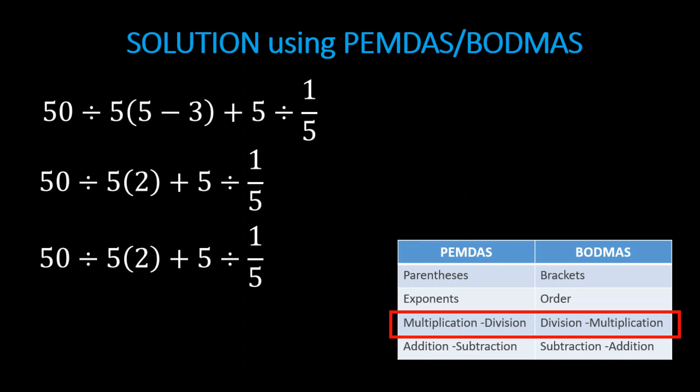But we can operate 5 divided by 1 over 5, which means 5 times the reciprocal of 1 over 5, which is 5 over 1.